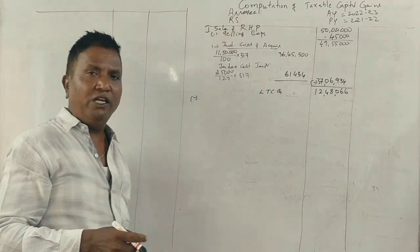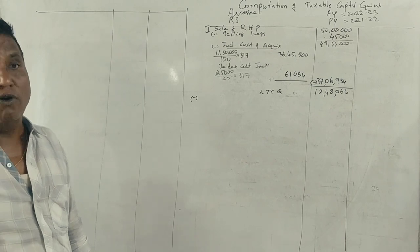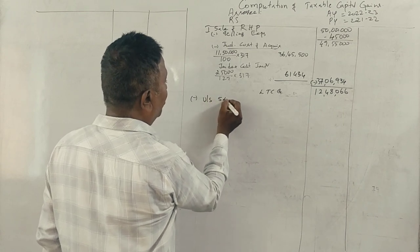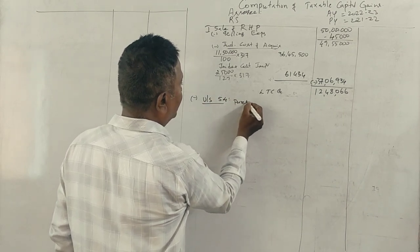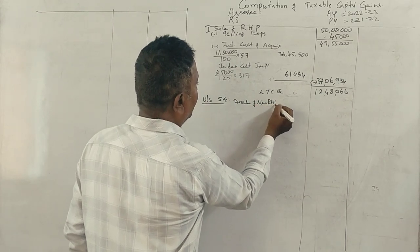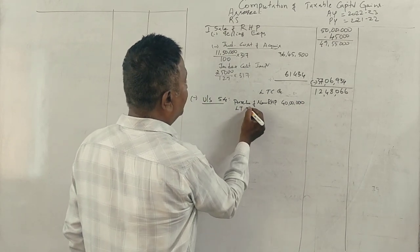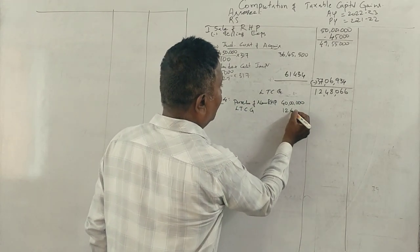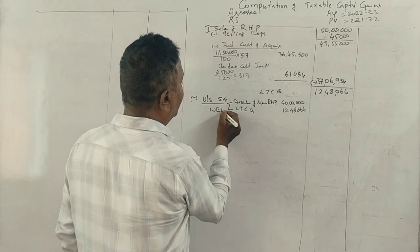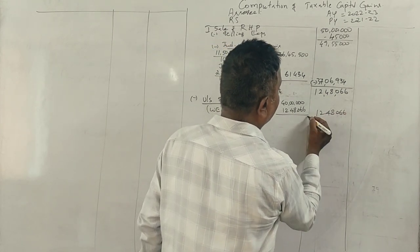She has purchased a new residential house property for 40,00,000. So long-term capital gain, the full 12,48,066 will be exempt under deduction provisions.